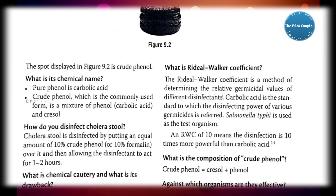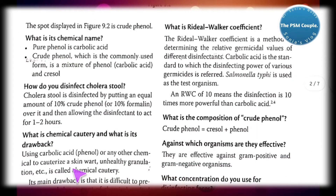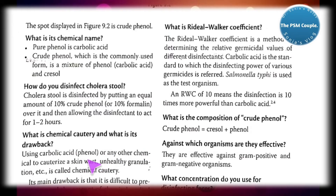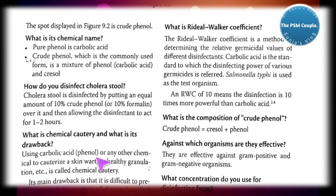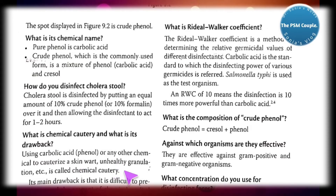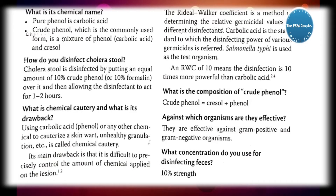What is chemical cautery and what is its drawback? Using carbolic acid (phenol) or any other chemical to cauterize a skin wart or unhealthy granulation tissue is called chemical cautery — because we are using a chemical. Its main drawback is that it is difficult to precisely control the amount of chemical applied on the lesion; too much or too little may be applied.